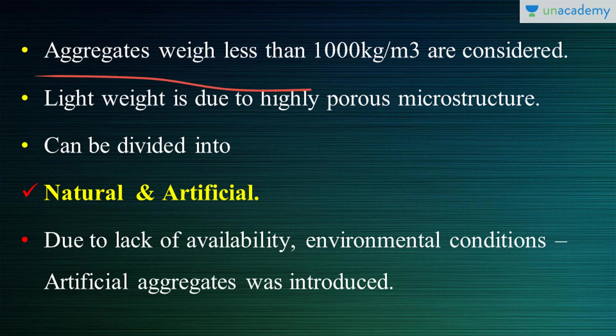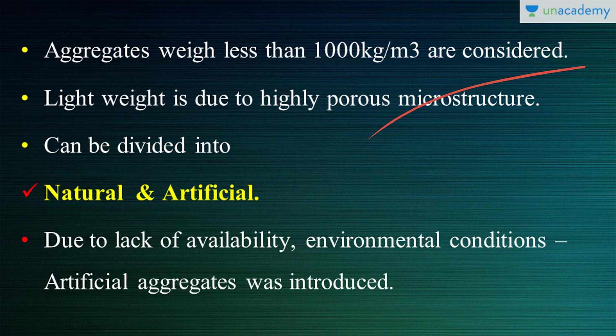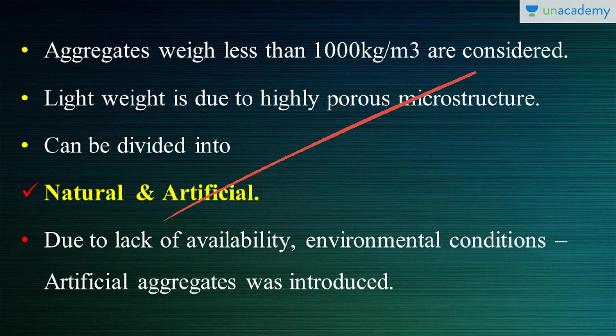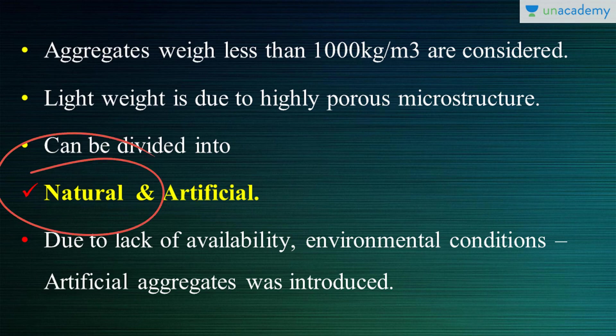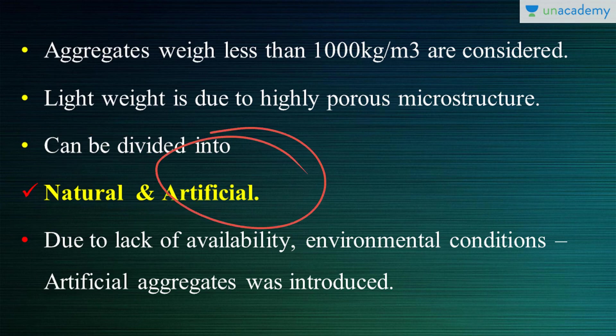Aggregates which weigh less than 1,000 kilograms per meter cube are considered lightweight aggregates. Their lightness is due to a highly porous microstructure. They can be divided into natural and artificial categories. Natural aggregates were discussed in a previous lesson; artificial aggregates are the ongoing series.